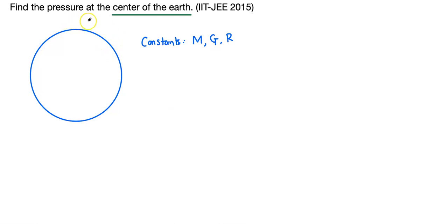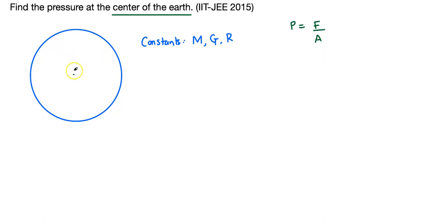We need to find the pressure at the center of the Earth. Let's recall the definition of pressure: pressure is force per unit area. So if there is a tiny observer standing at the center of the Earth, what is the force they would experience per unit area? That is the pressure. So let's think about the force first, and then maybe we can think about the area.